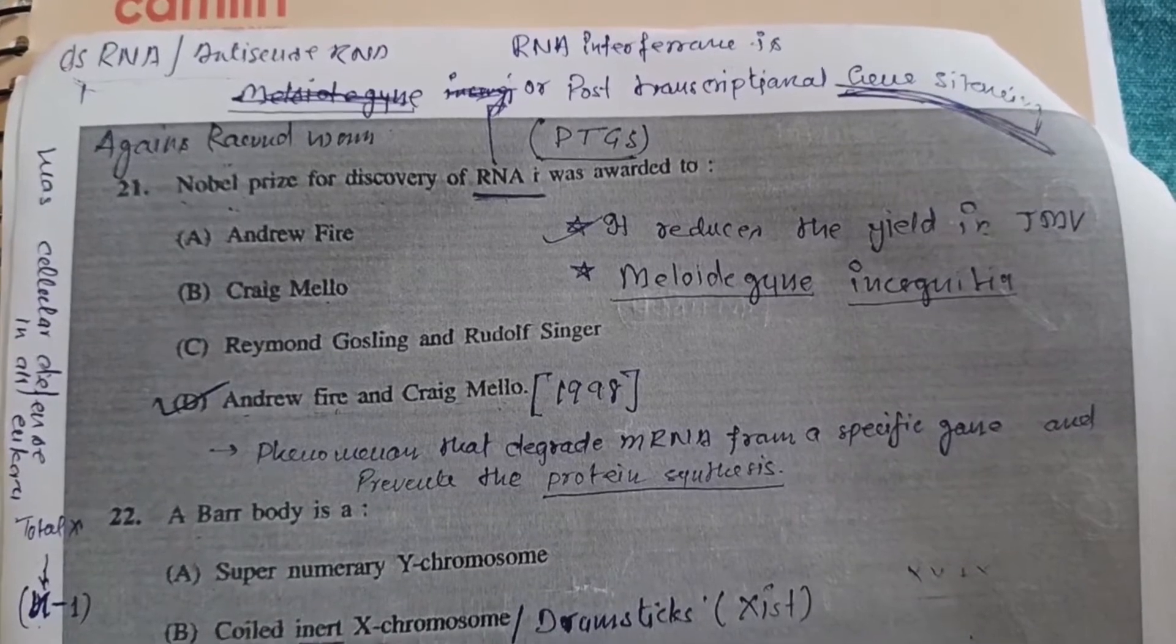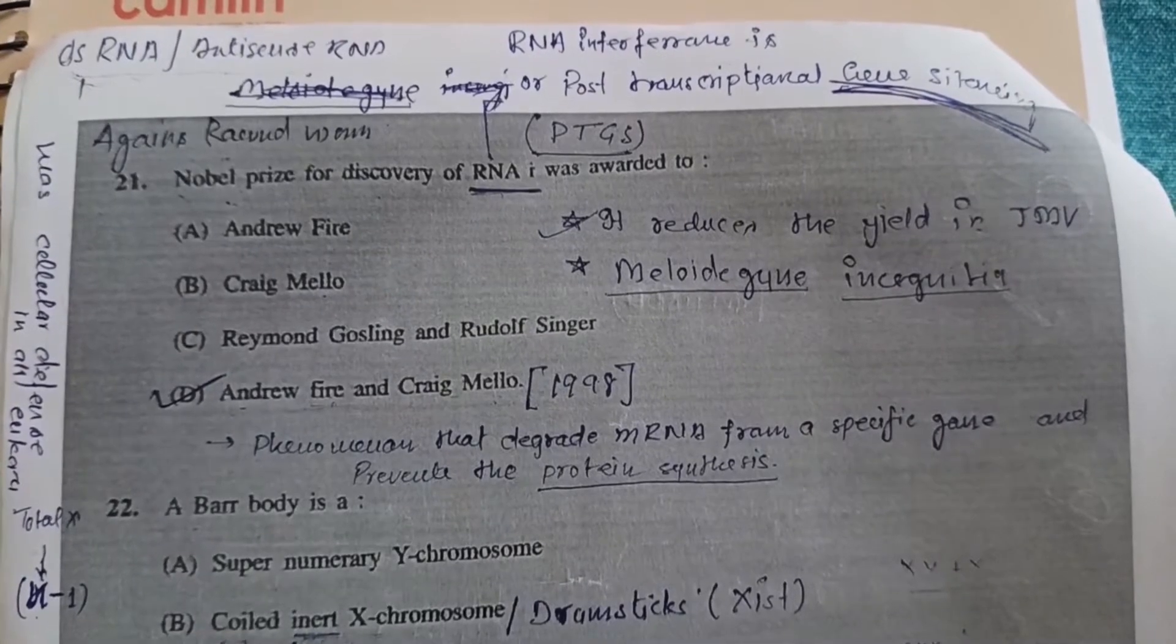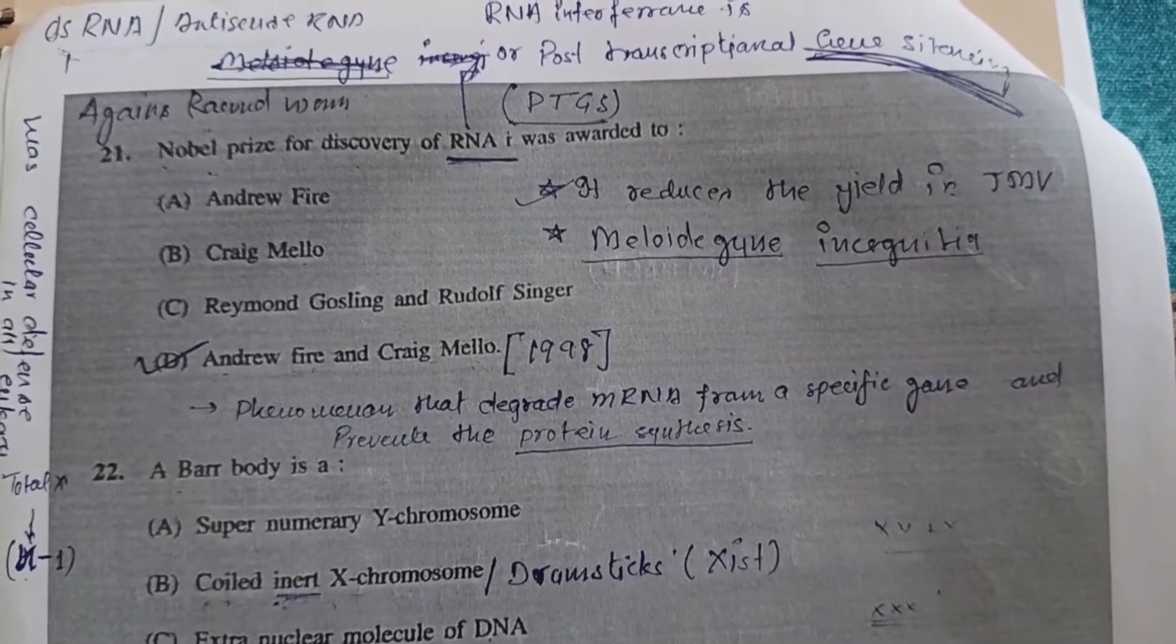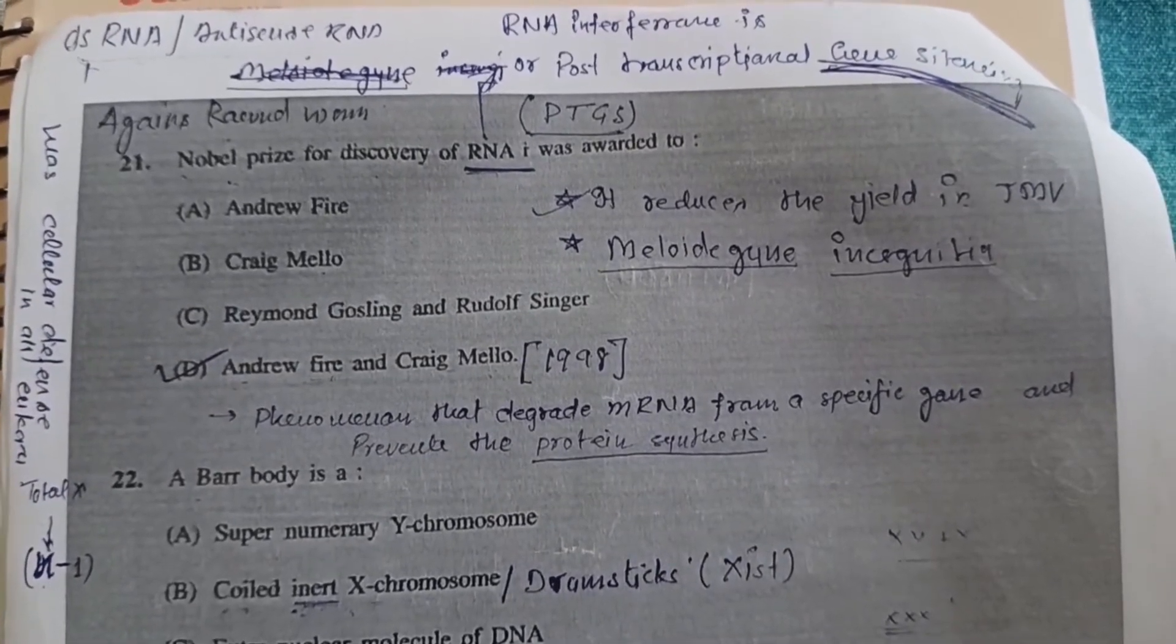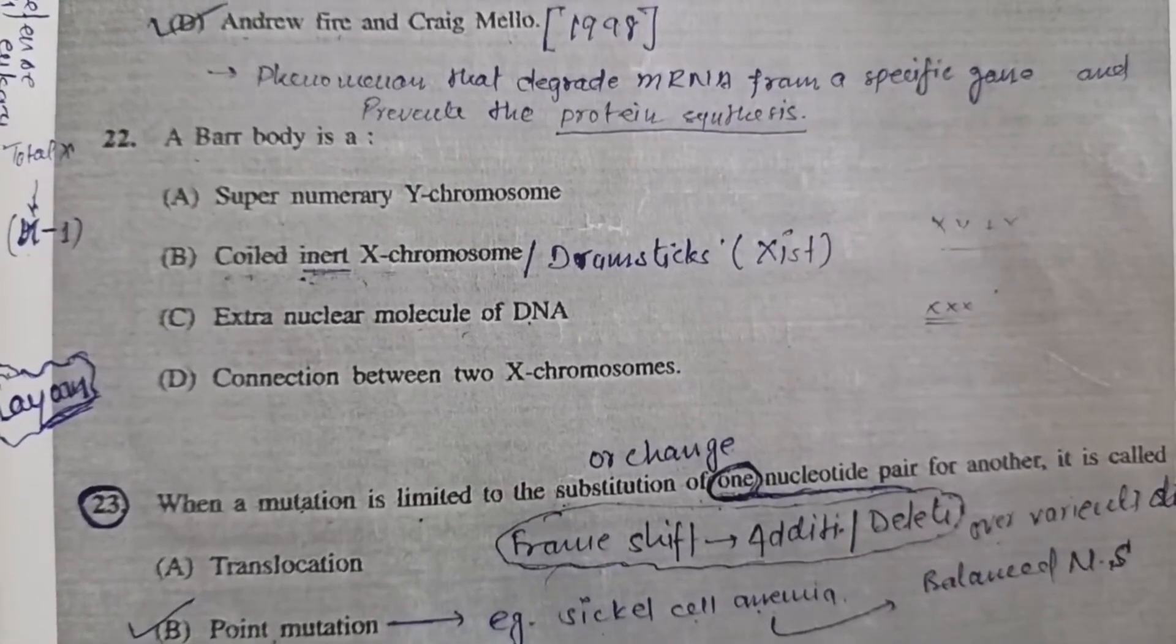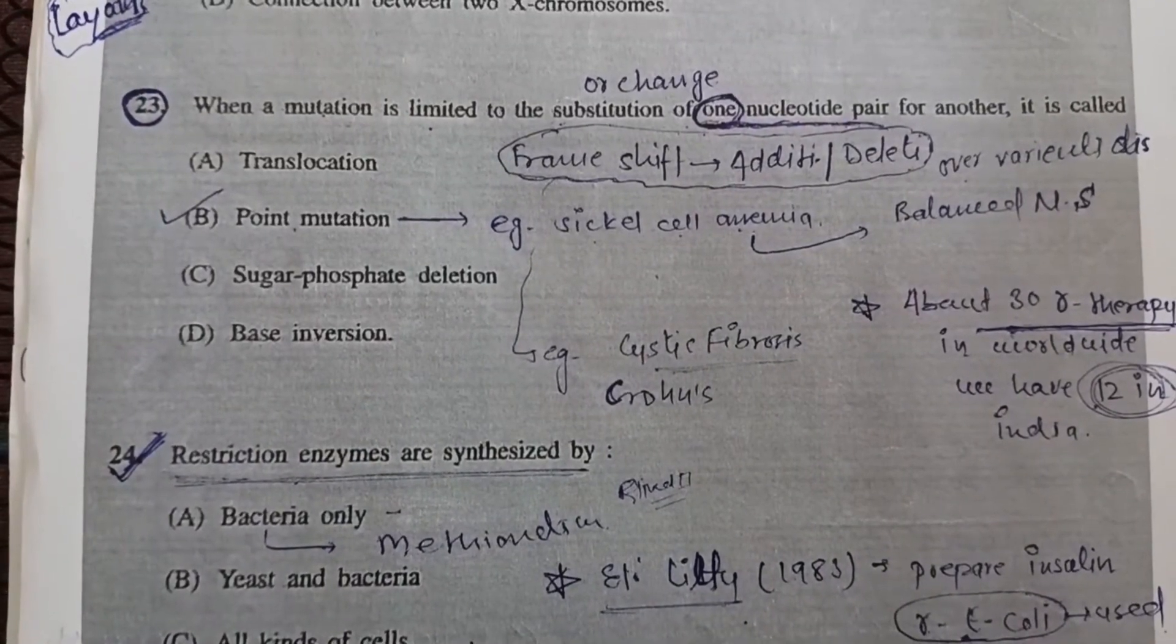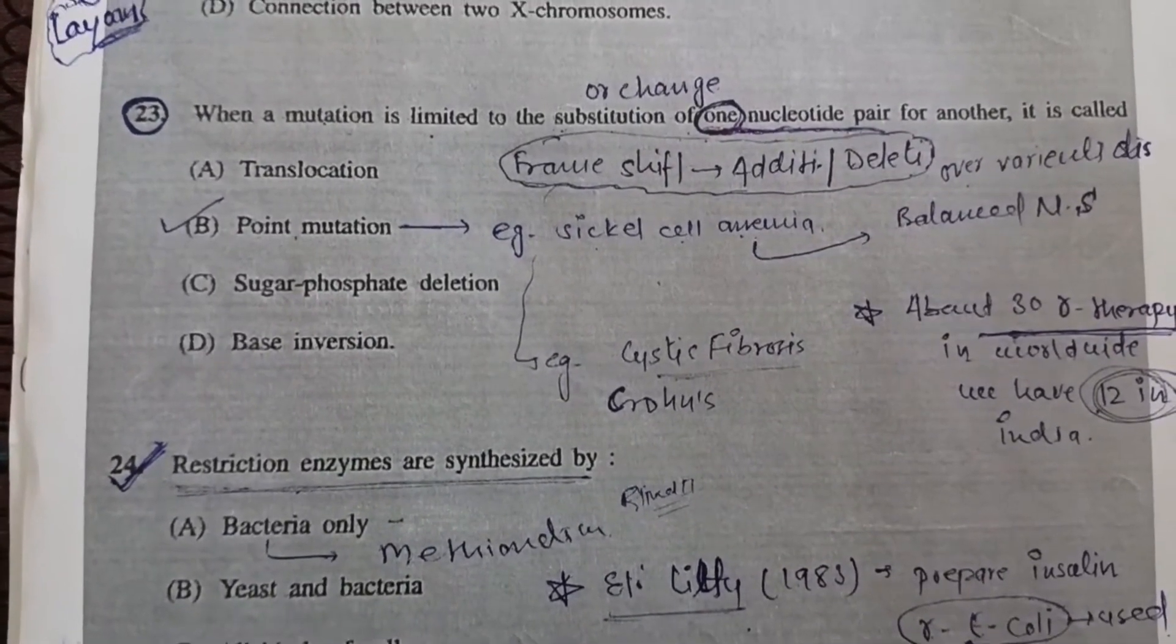Question 21: Nobel Prize for discovery of RNAi was awarded to - RNAi is RNA interference, a post-transcriptional gene silencing. This is a phenomenon by which a specific gene or mRNA gets silenced, automatically preventing protein synthesis. Option D, Andrew Fire and Mello, were the scientists awarded the Nobel Prize for RNAi discovery. Question 22: A Barr body is - Very simple, option B, coiled inert X chromosome. Question 23: When a mutation is limited to substitution of one nucleotide pair for another, it is called - B, point mutation.